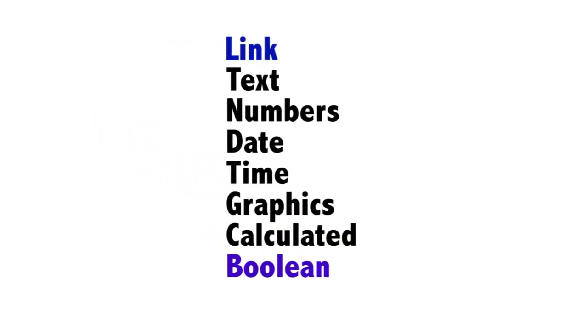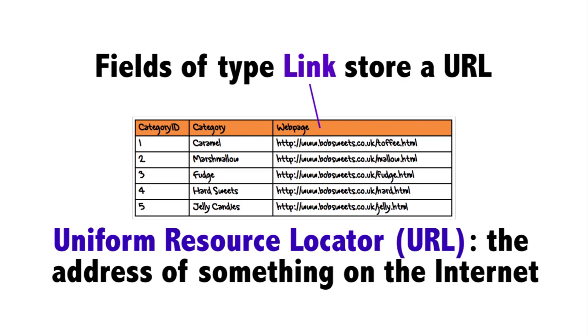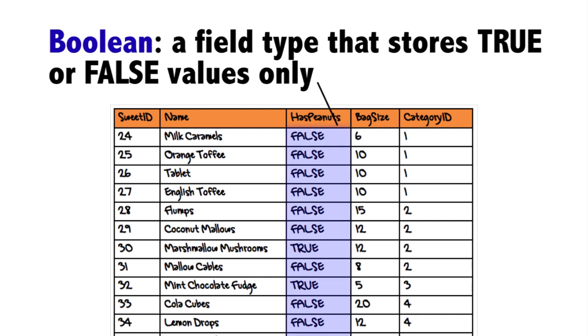Link and Boolean are two new field types which we can add to the six we already know. Fields of type link store uniform resource locators — URLs — the web addresses we use to find web pages. Boolean fields store values which can only be true or false.